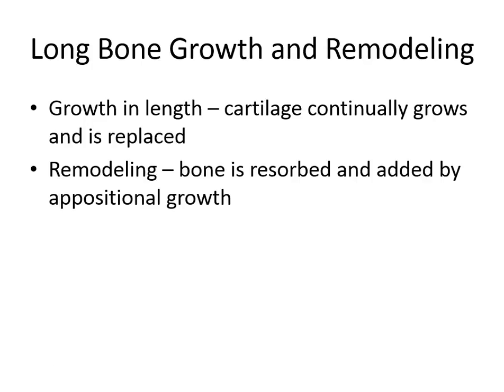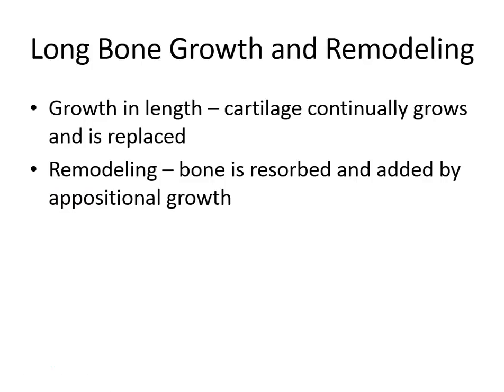Now that bones are made, we're just growing in length and remodeling. Growing in length occurs at the epiphyseal plate — the cartilage cells there divide, spread out, and get replaced with bone tissue. Remodeling involves breaking down bone — resorbing it — and building it back up through growth from osteoblasts. Osteoclasts break it down, osteoblasts build it back up, giving us fresh bone.